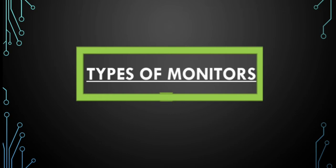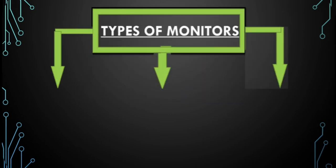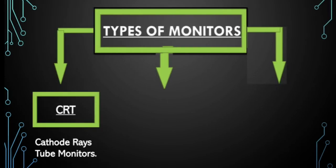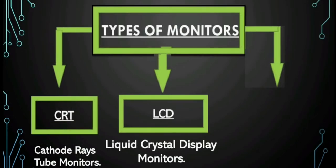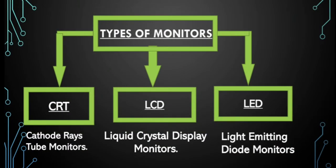Types of monitors. Monitors are further classified into three types. First, CRT — cathode ray tube monitors. Second, LCD — liquid crystal display monitors. And third, LED — light emitting diode monitors.